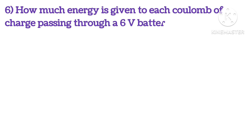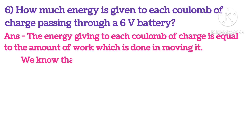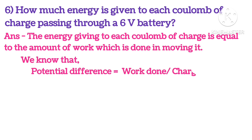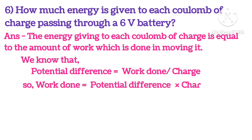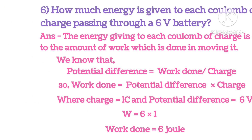How much energy is given to each coulomb of charge passing through a 6-volt battery? The energy given to each coulomb of charge equals the work done in moving it. We know that potential difference equals work done divided by charge, so work done equals potential difference multiplied by charge. With charge = 1 coulomb and potential difference = 6V, the work done will be 6 joules.